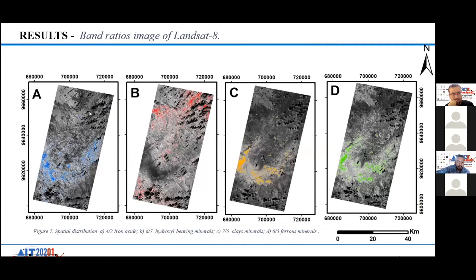Band ratio images were produced to identify the spatial distribution of iron oxides shown as blue pixels in the south of the area. To identify hydroxyl-bearing minerals, band ratio 6 over 7 was used, highlighted as red pixels in the north and south of the study area. To identify clay minerals, band ratio 7 over 6 was applied, shown as orange pixels in the southern study area.